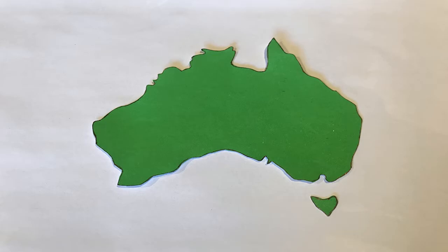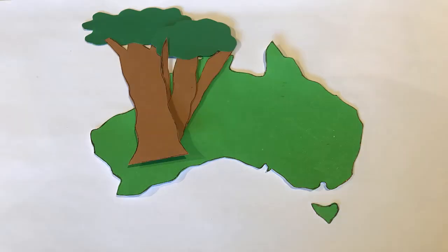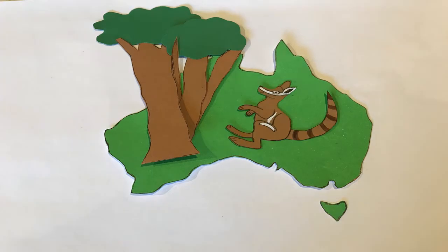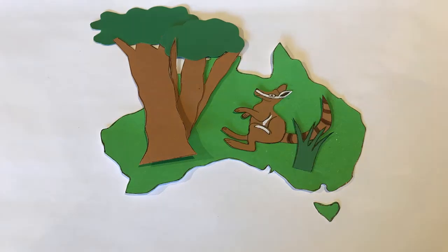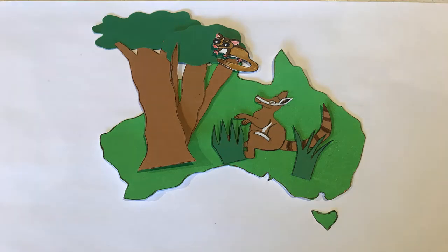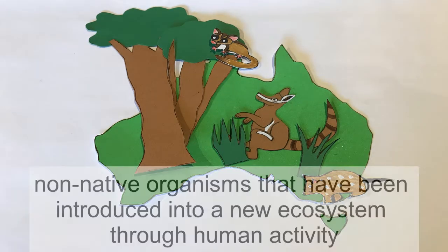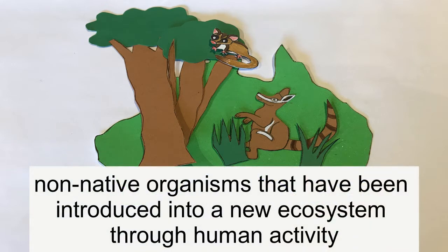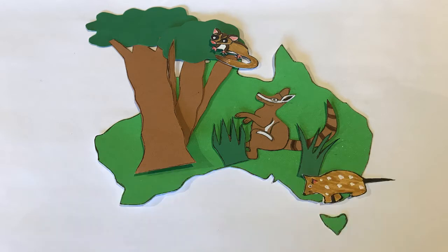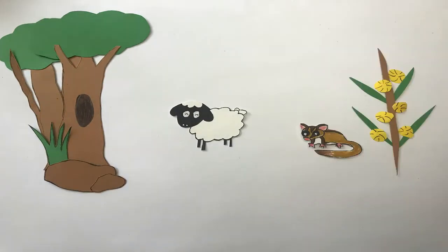The geographical isolation of Australia has created a unique ecosystem from the rest of the world, yet also makes it quite fragile. Introduced species from other countries can cause damaging effects on our biodiversity. These introduced species are classified as non-native organisms that have been introduced into a new ecosystem through human activity, and threaten the environment, agriculture and the native flora and fauna present.